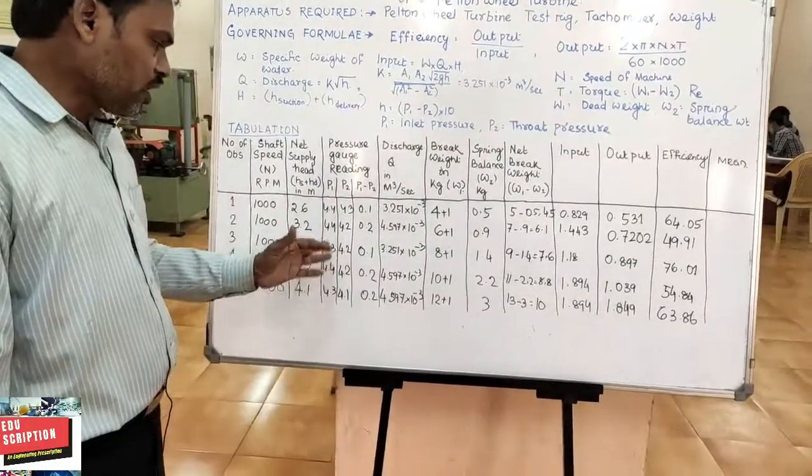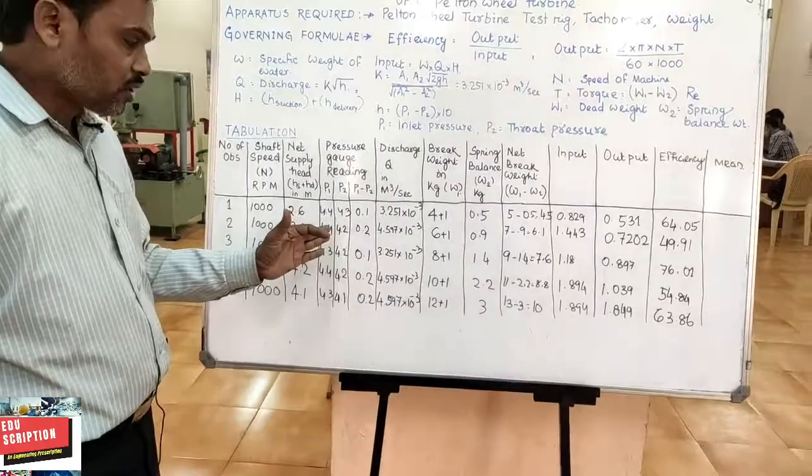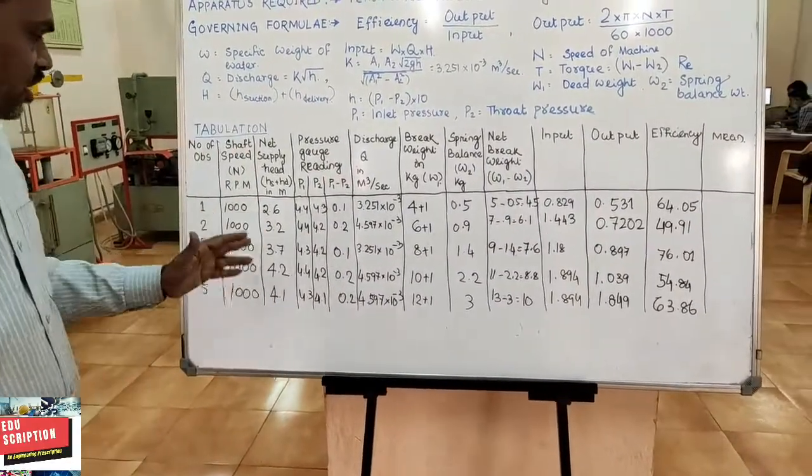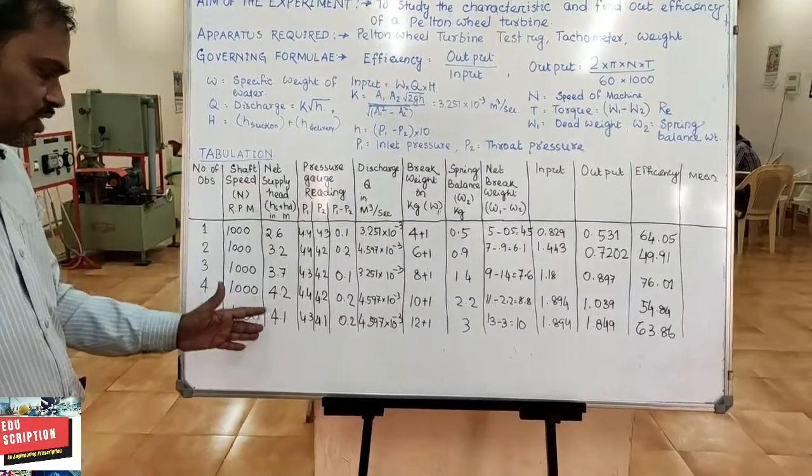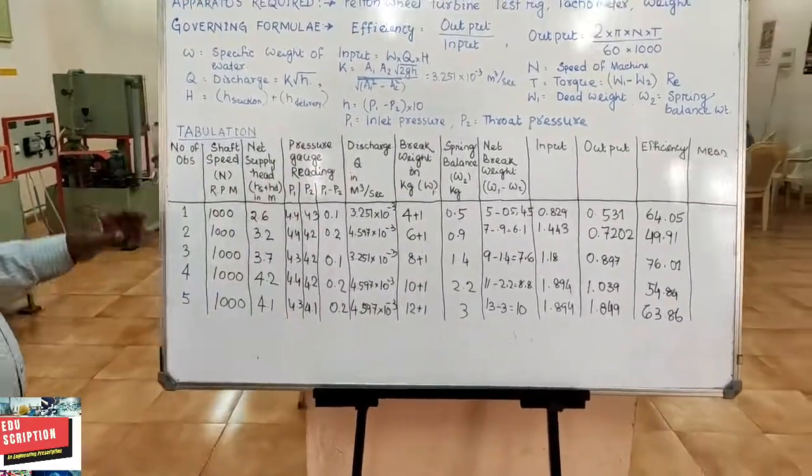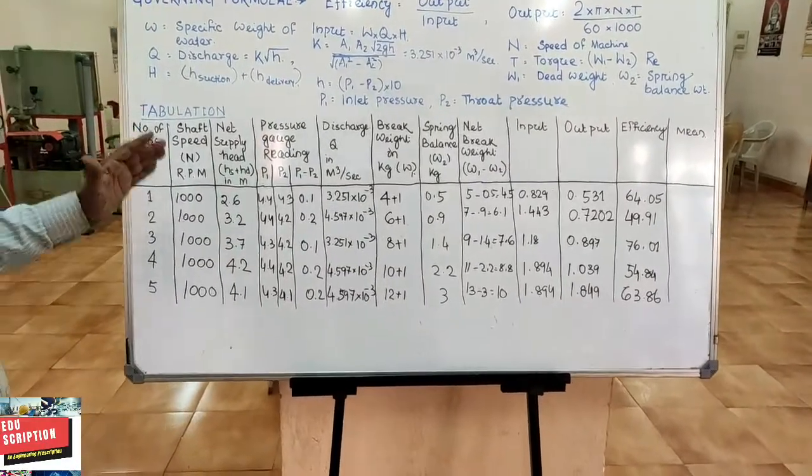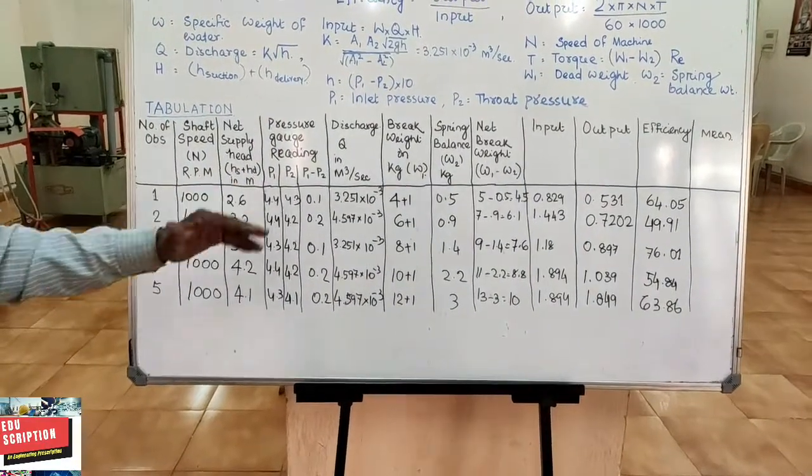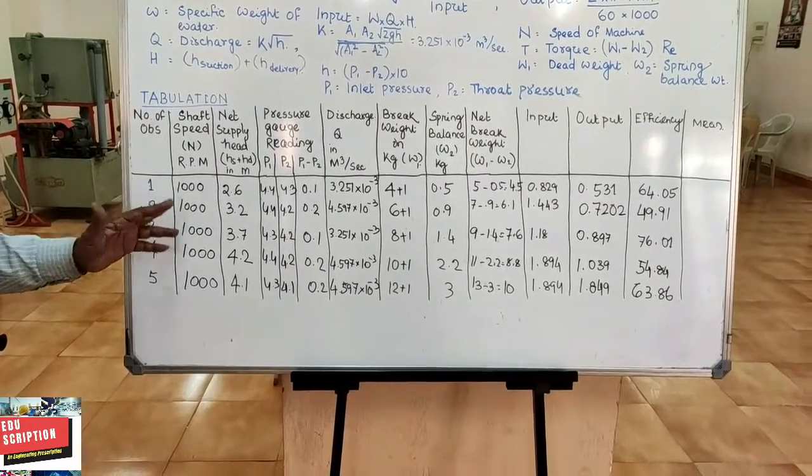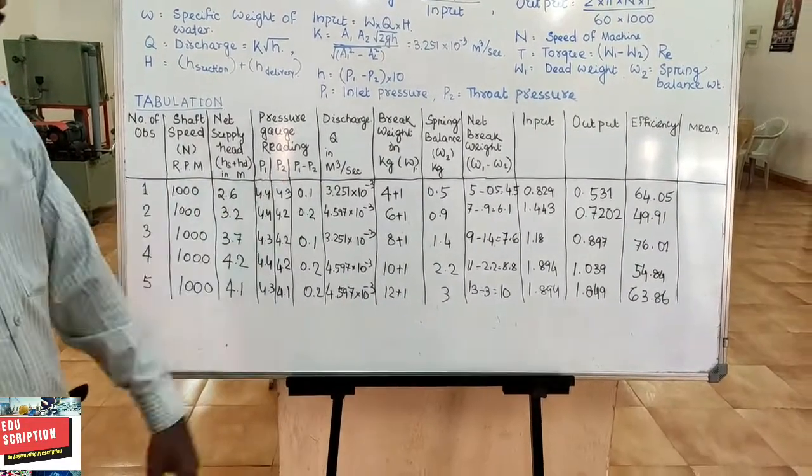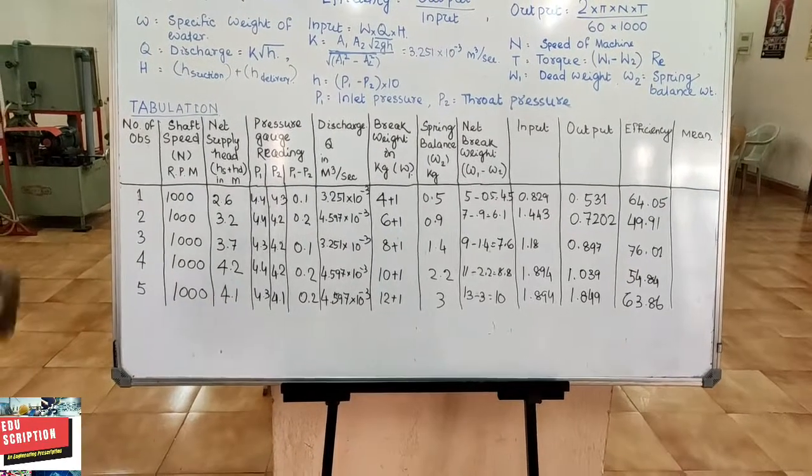Inlet pressure and throat pressure also. Collect the data of the net supply head. The total head is like this. These are the tabulation parts. In each observation we maintain the constant RPM, that is 1000. After that, this is your tabulation part: net brake weight, input like this, output like this, efficiency like this.